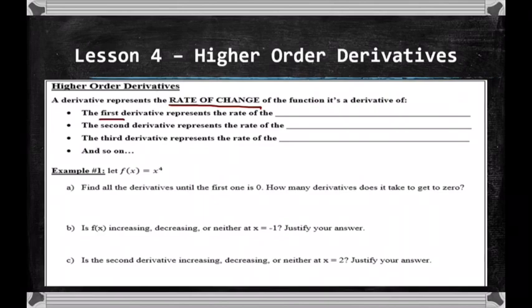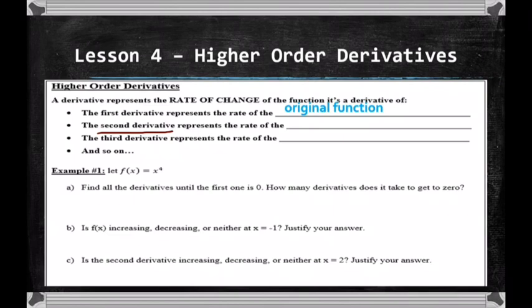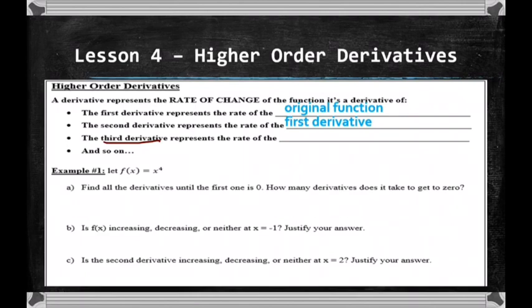One thing to keep in mind about a derivative is that it represents the rate of change of whatever it's a derivative of. The first derivative represents the rate of change of the original function. The second derivative represents the derivative of the first derivative — it's the rate of change of the first derivative. The third derivative represents the rate of change of the second derivative, and so on. Each derivative represents the rate of change of the derivative just before it.